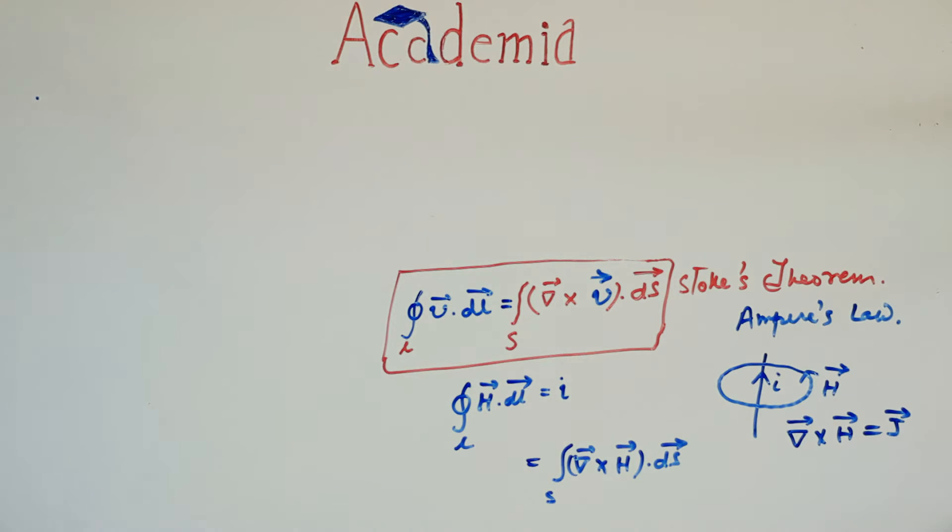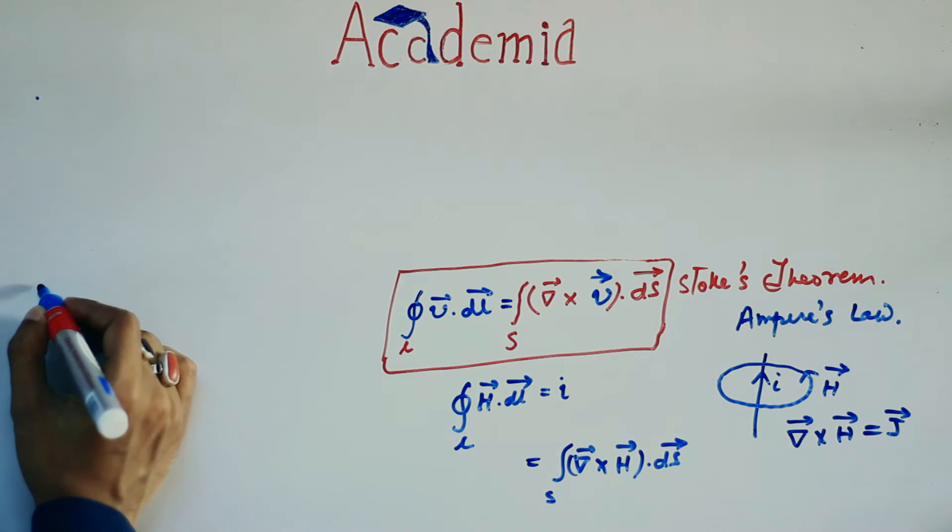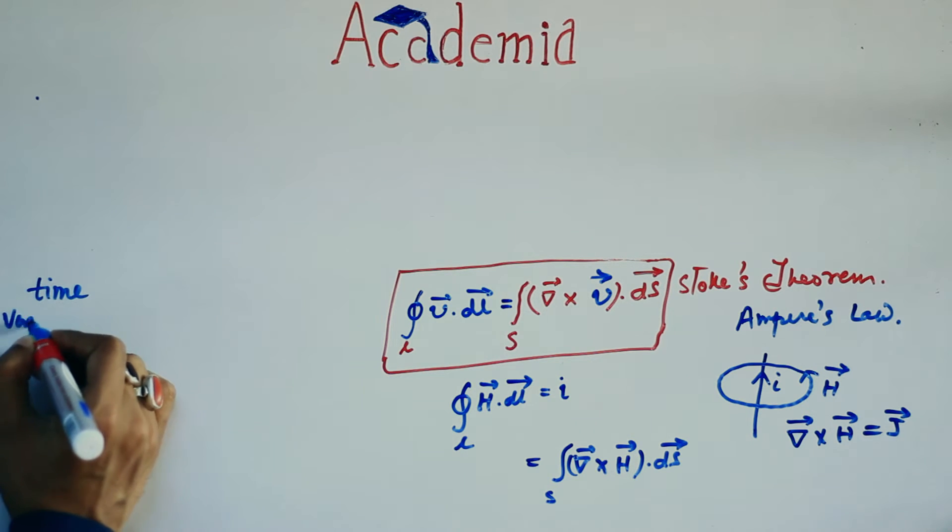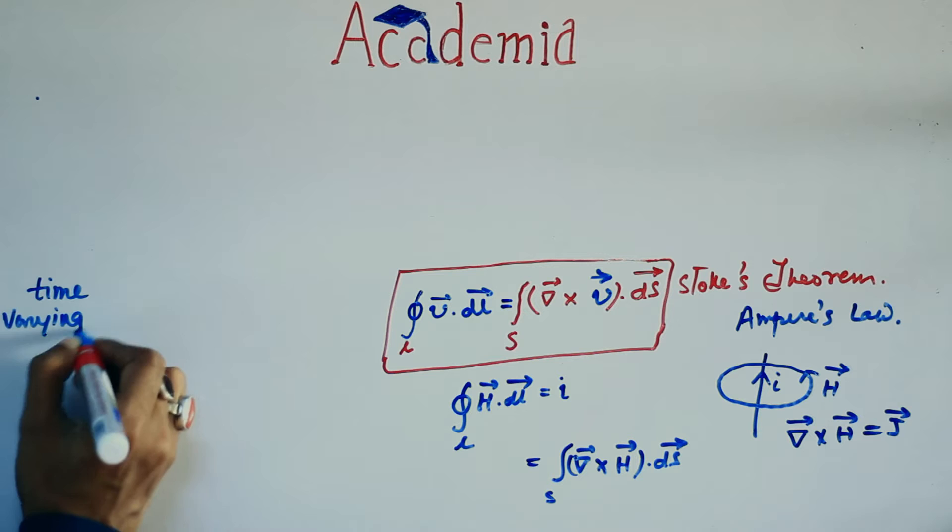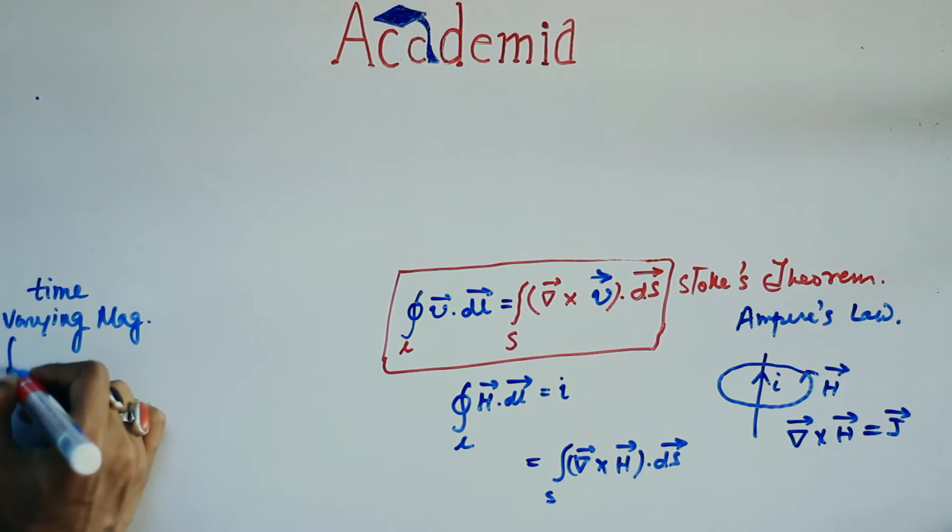He was a visionary mathematician who postulated and modified laws without even experimental evidence and became a legend by predicting the existence of something which is known as electromagnetic wave today.